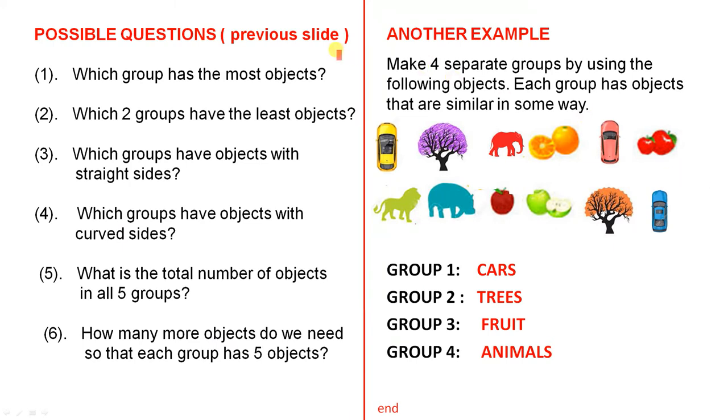Some possible questions from the previous slide. Which group has the most objects? Which two groups have the least objects? Which groups have objects with straight sides? Which groups have objects with curved sides? What is the total number of objects in all five groups?